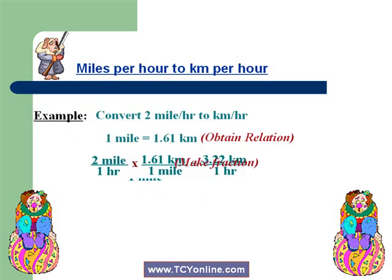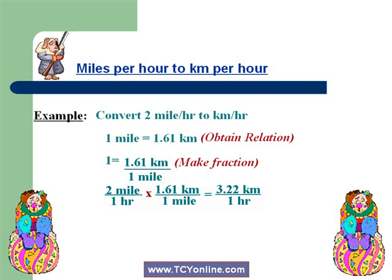Now we can write 2 miles per hour as 2 miles over 1 hour. To convert this into kilometers per hour, multiply 2 miles over 1 hour by 1.61 kilometers over 1 mile. We simply get 3.22 kilometers over 1 hour. Hence, 2 miles per hour equals 3.22 kilometers per hour.